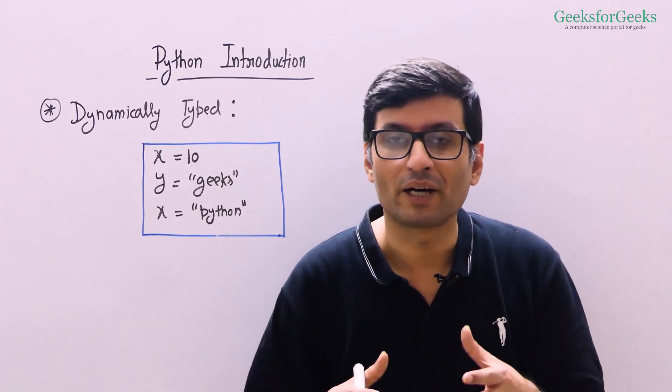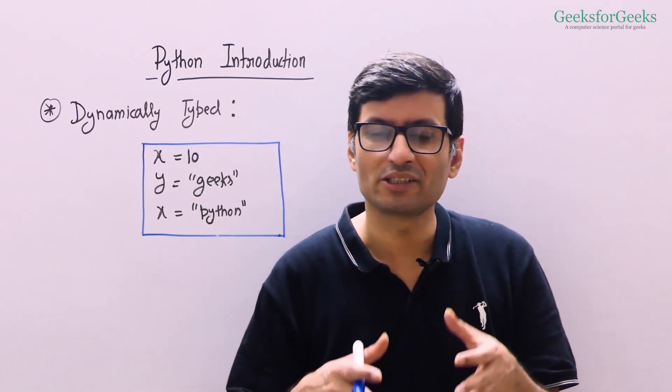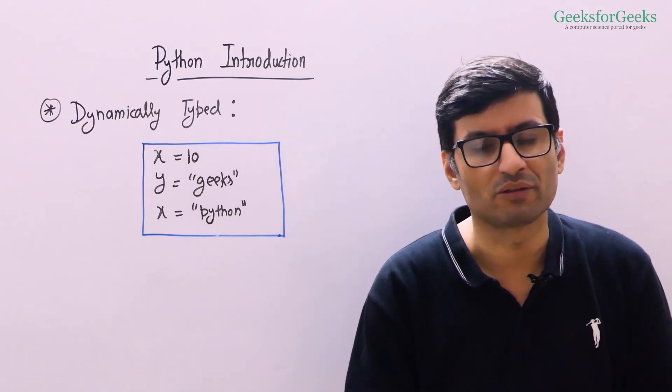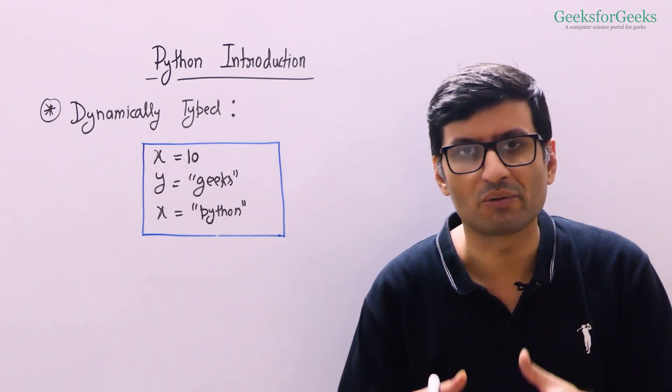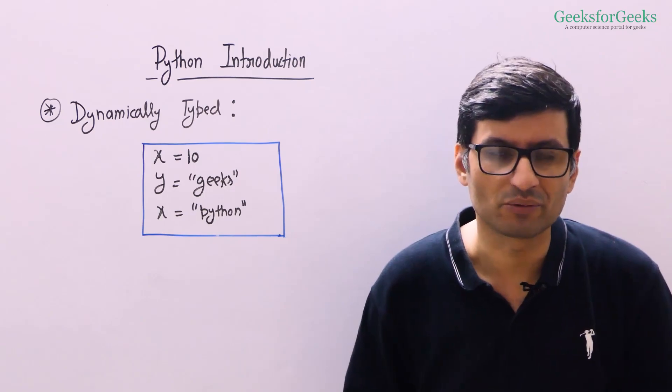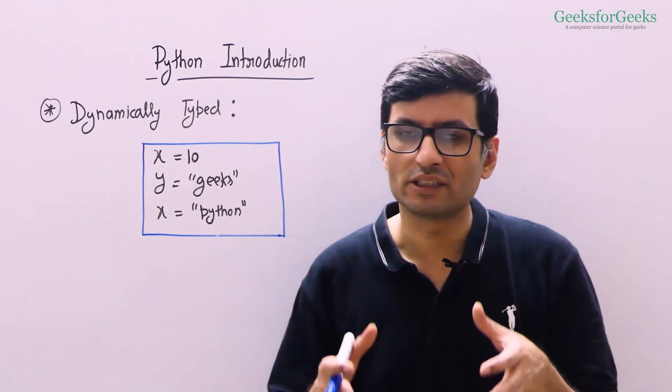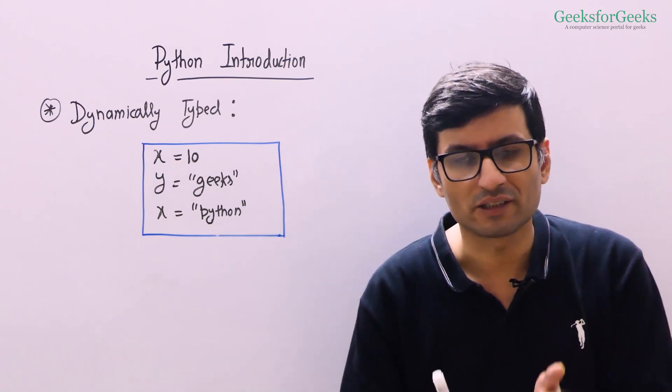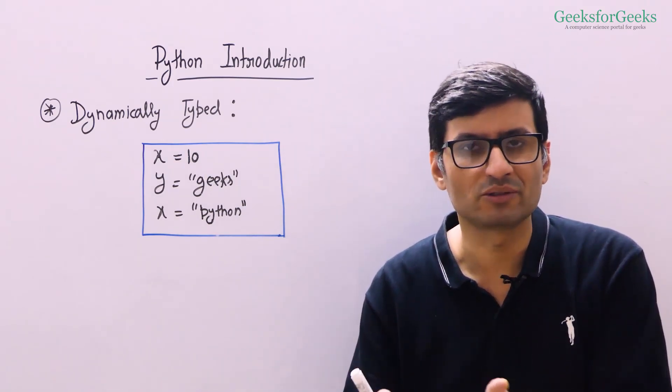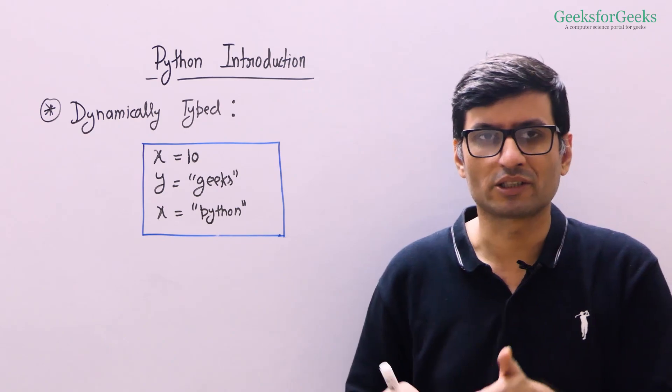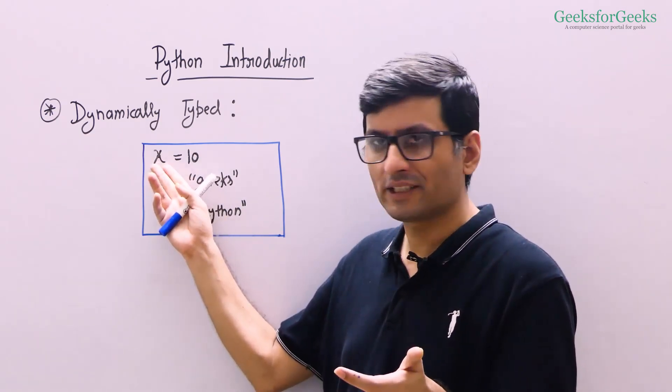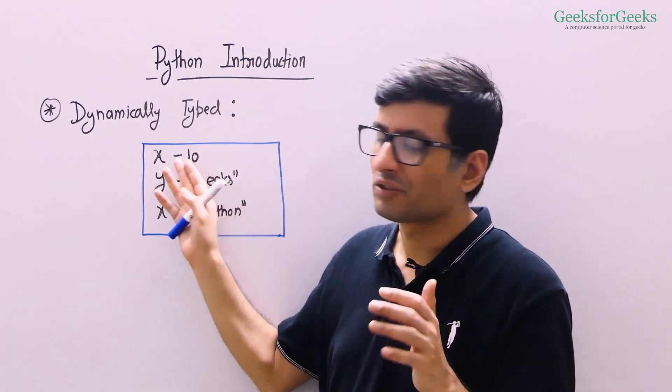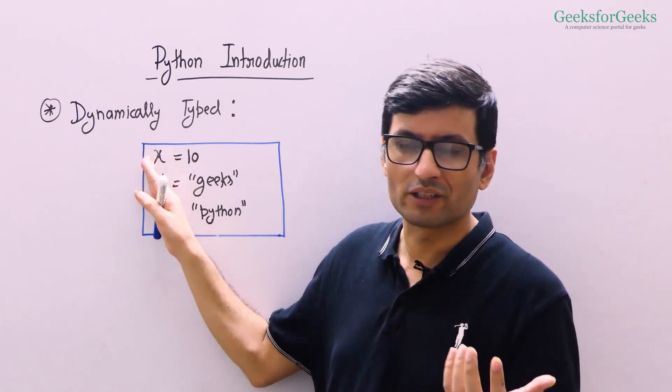The next feature is Python is dynamically typed, and this is different from C++ and Java. C++ and Java are statically typed languages. In C++ and Java, if you're creating a variable, then you must specify the type of values that this variable is going to hold. For example, here I have a variable x storing an integer. In Python, I don't have to tell whether this x is going to store an integer value or float value.